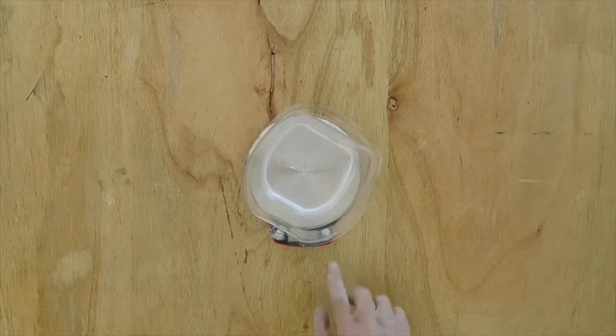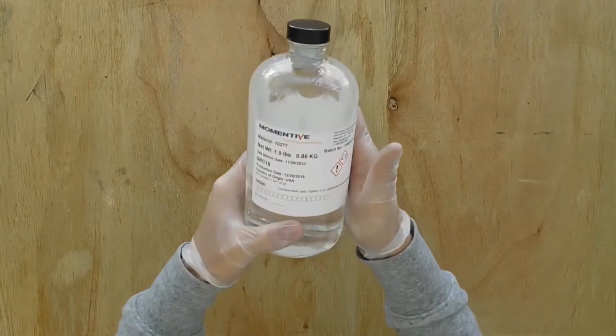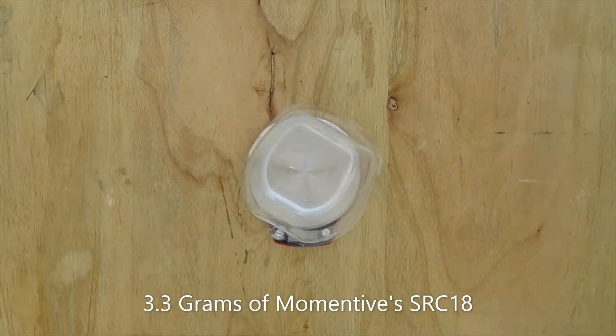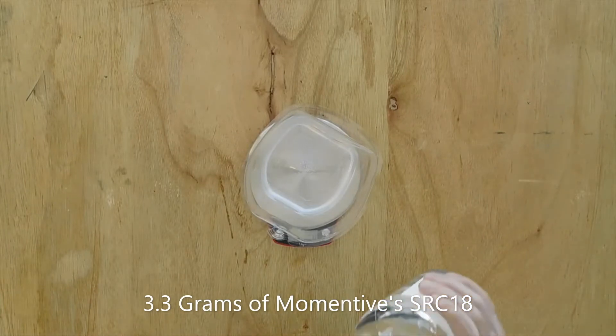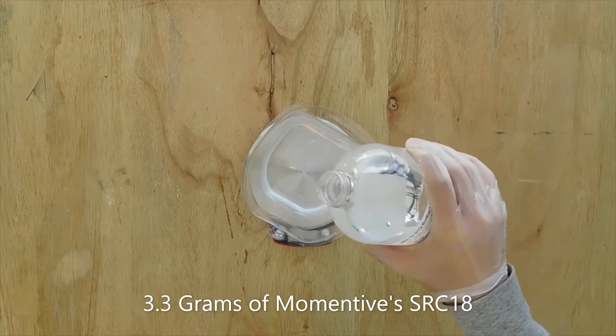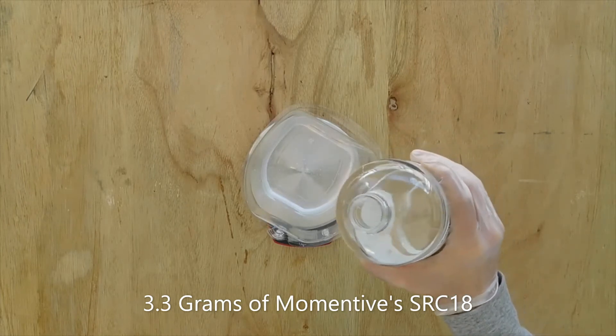Once complete, zero out the scale again. Next, add Momentive's SRC-18 to the SILGRIP PSA. Pour 3.3 parts per weight of SRC-18 into the SILGRIP PSA. In this case, since I added 100 grams of SILGRIP PSA, I will add 3.3 grams of SRC-18. You may want to pre-pour your components or use a medicine dropper for the SRC-18.